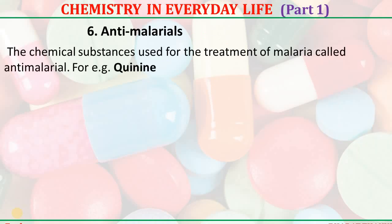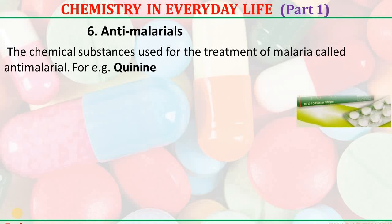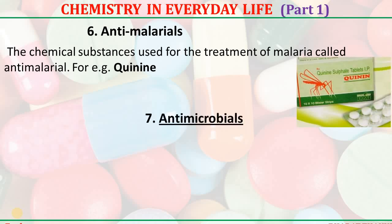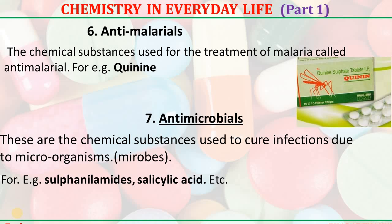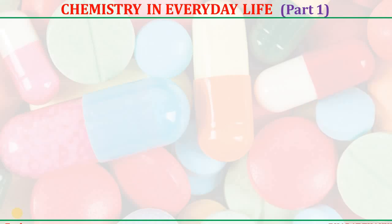Antimalarials — the chemical substances used for the treatment of malaria are called antimalarials. For example, quinine. Antimicrobials — these are the chemical substances used to cure infections against microorganisms or microbes. For example, sulfonamides or salicylic acid, etc.